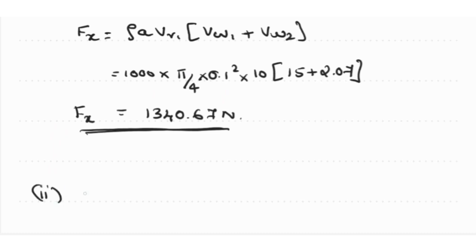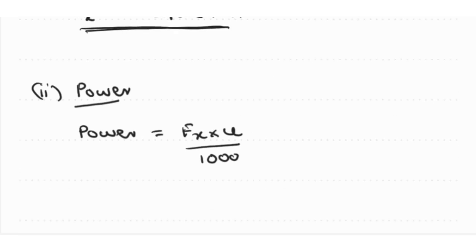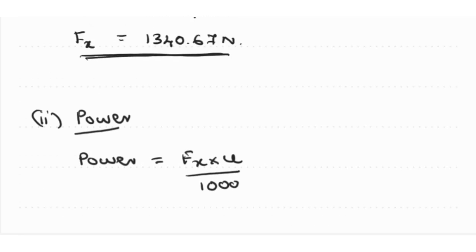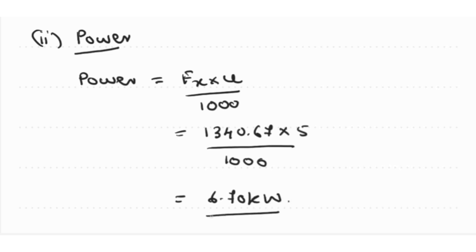Moving to power: Power equals Fx·U divided by 1000 to get it in kilowatts. Substituting: Fx is 1340.67 and U is 5, divided by 1000. We get the answer as 6.70 kilowatts.